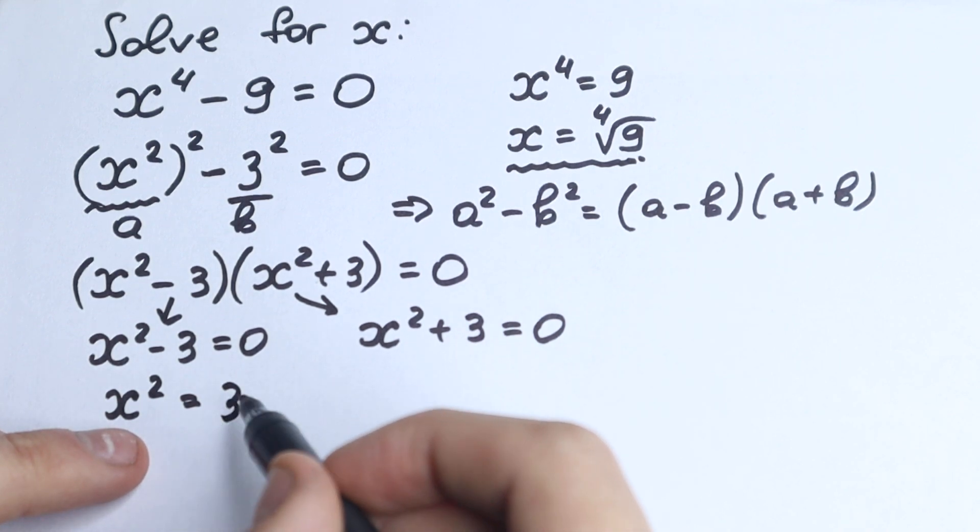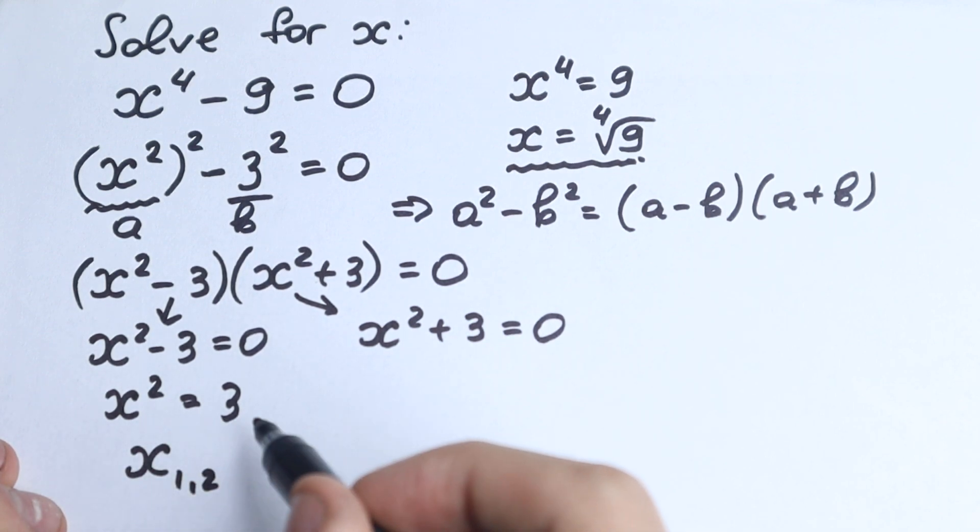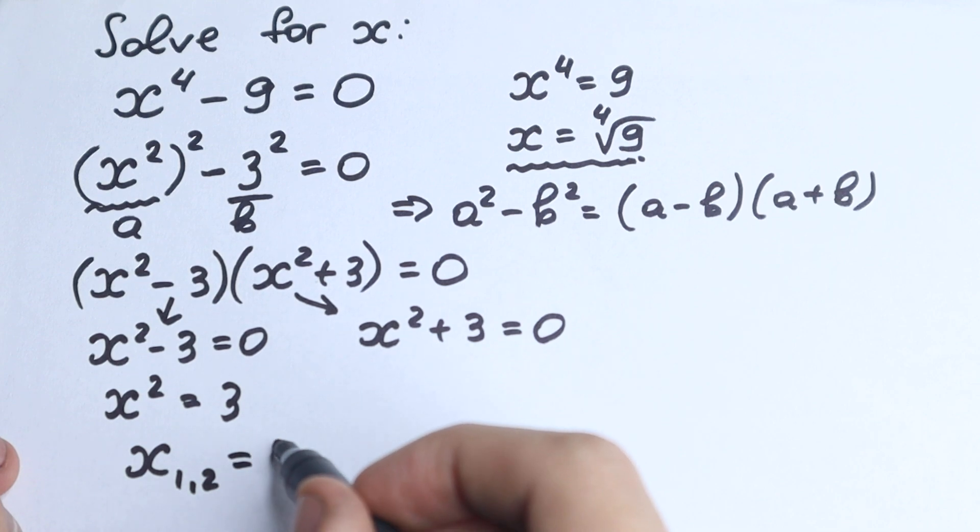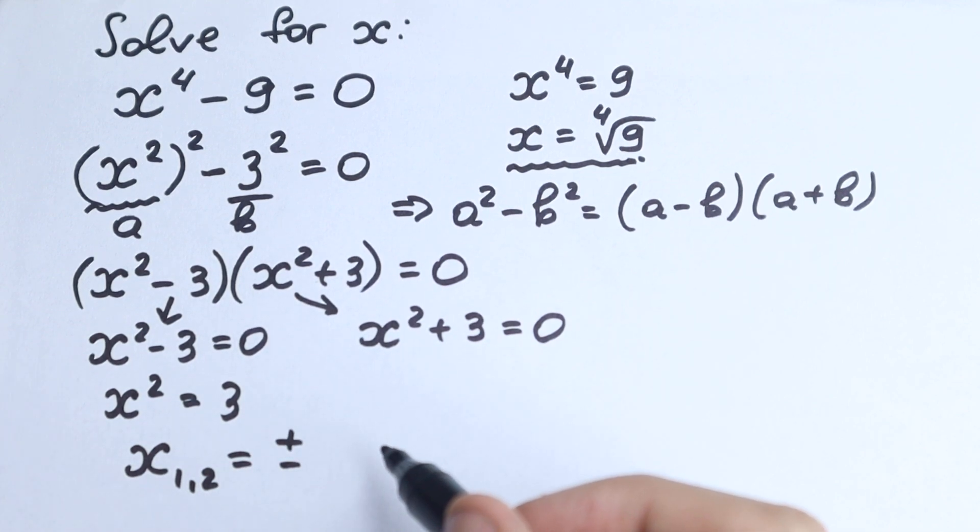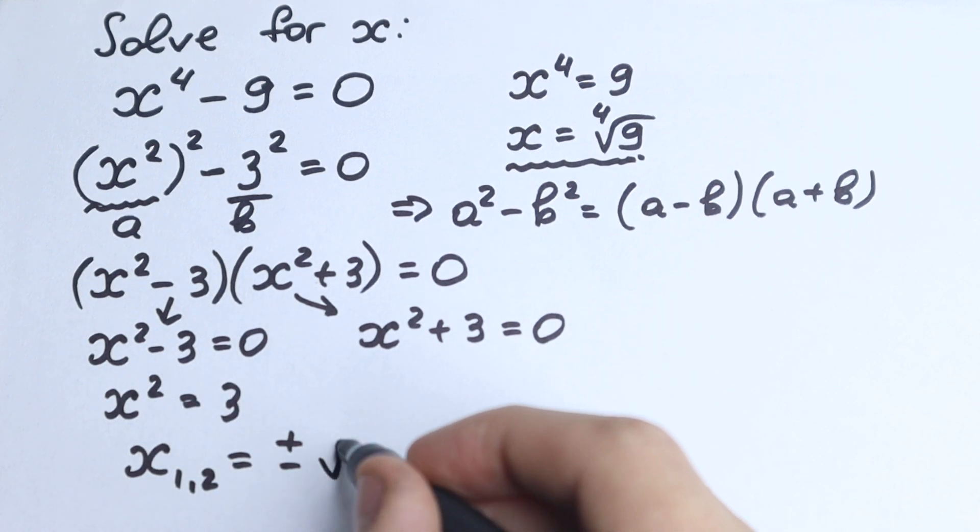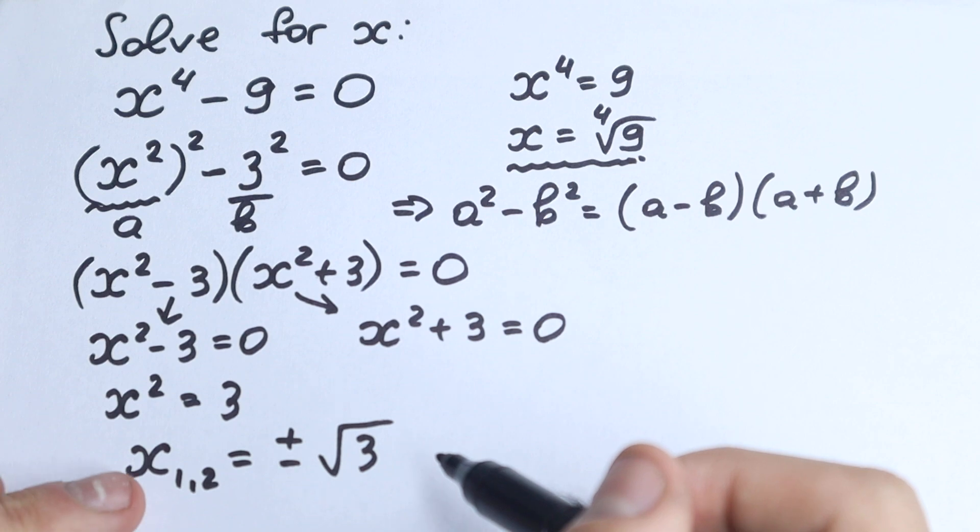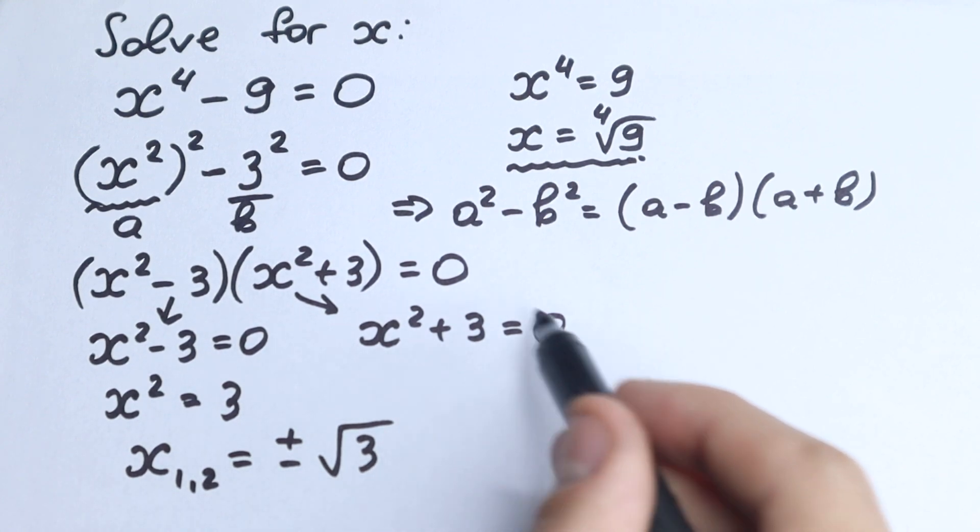So we have x squared equal to three. And x equals, so x first and second, right here hides our two roots, equal to plus minus—don't forget about it because we have square—square root of three. We take square root on both sides, plus minus square root of three. So right here as you can see we find two roots.